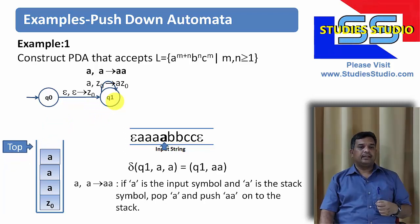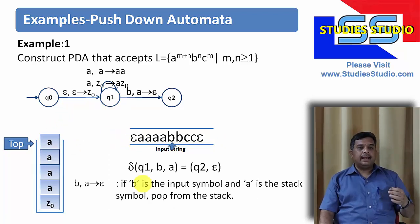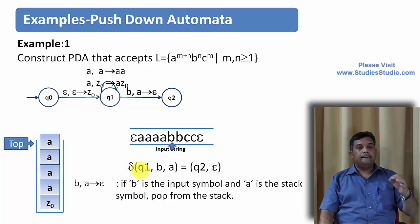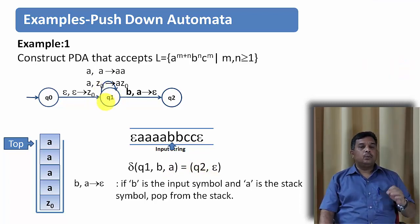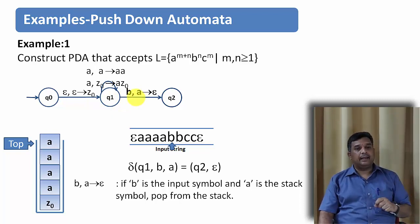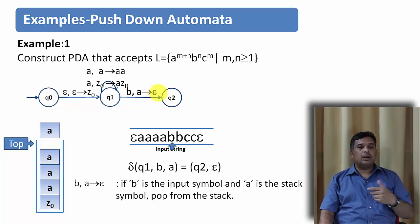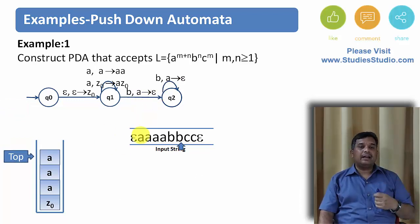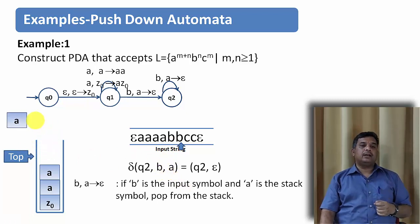Now the next input symbol is b. So b is the input symbol and a is on top of the stack. We pop it off: delta(q1, b, a) = (q2, epsilon). We were in state q1, got input b, had a on top of the stack, so we pop a and move to q2. The next symbol is another b — same situation: b is the input, a is on top of the stack, so we pop the a.